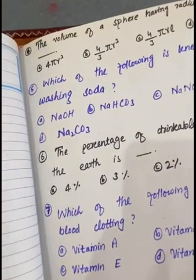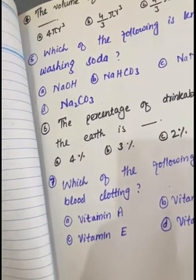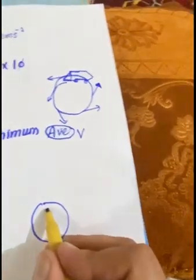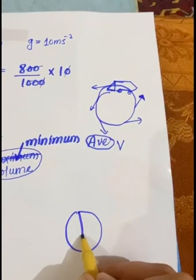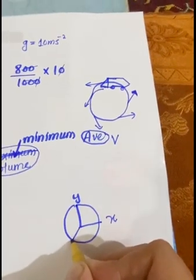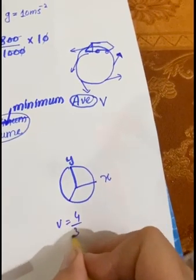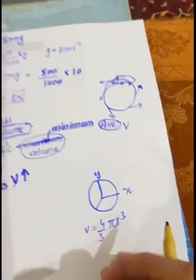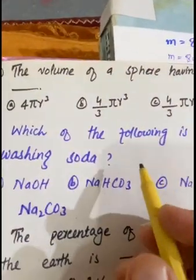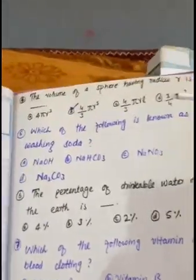MCQ number 4: the volume of a sphere having radius r. A sphere is a three-dimensional body containing x, y, and z axes — just like a football. The formula for the volume of a sphere is V = (4/3)πr³. So option B, (4/3)πr³, is the correct answer.